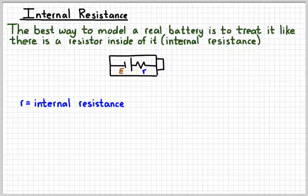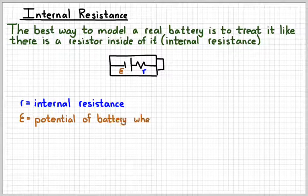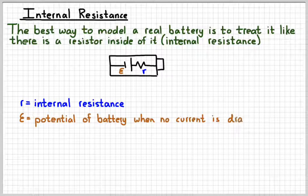So the voltage created inside the battery is given the symbol E, the script E. And that would represent the potential of the battery when there's no current drawn from it.